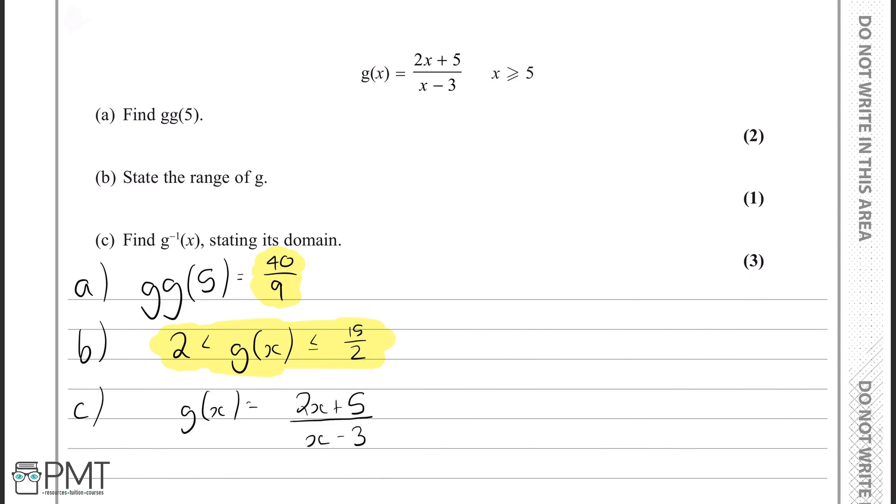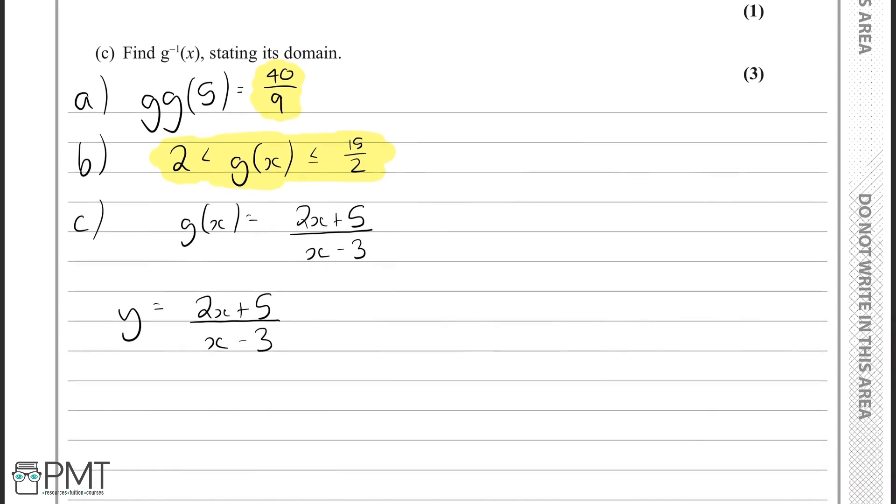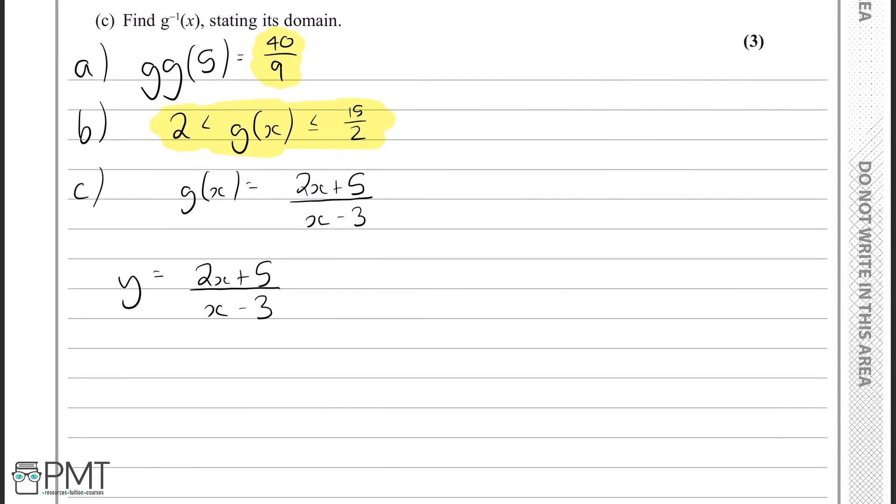The best way to go about this is we replace the g of x with a y and keep the function the same. Then what we want to do is make x the subject of this equation. When we define x as the subject of this equation, we'll have the inverse of g of x. Because that's actually what we're doing, you're flipping the x's and the y's.